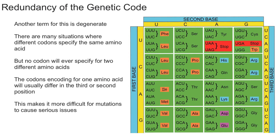If you haven't taken biochem yet, this isn't really important — you won't have to memorize these terms until biochem. But essentially, the redundancy of the genetic code just means that there are many situations where different codons will specify the same amino acid.